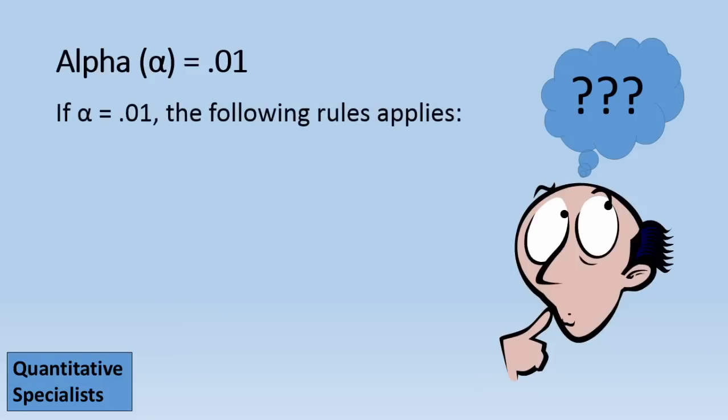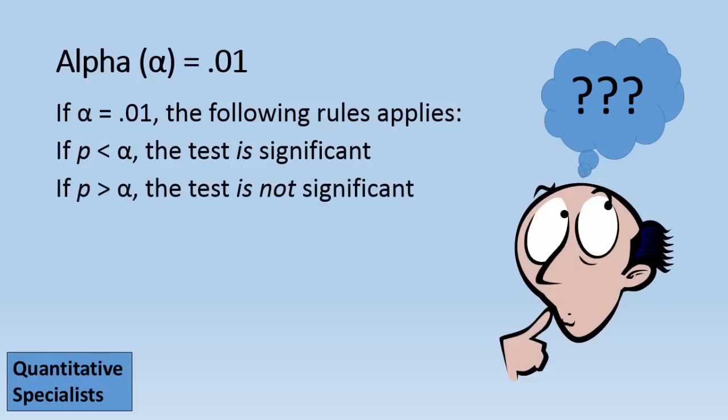Now if we look at alpha .01, we use really the same decision rule. If p is less than alpha, this time alpha is .01 though, the test is significant, whereas if p is greater than alpha, the test is not significant.